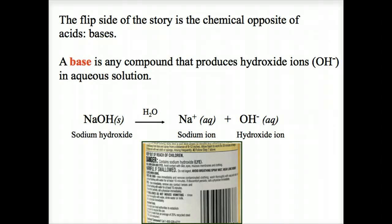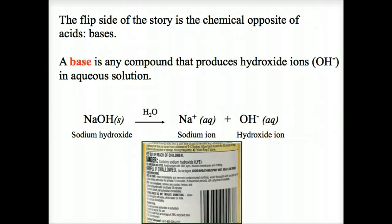When bases dissociate in water, they produce hydroxide ions. Each includes one hydrogen atom and one oxygen atom, and a negative charge on the OH combination.